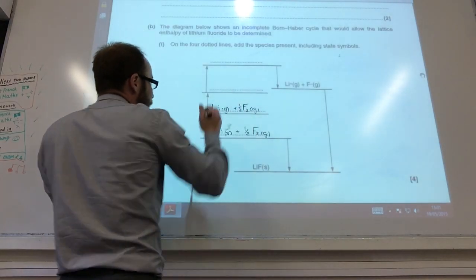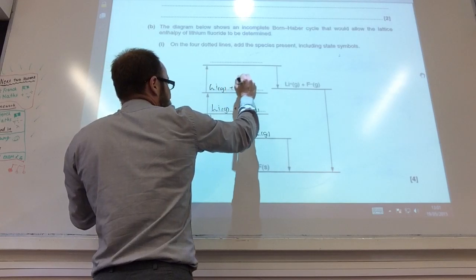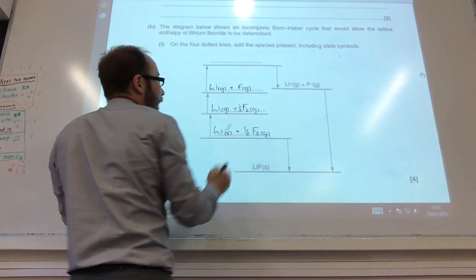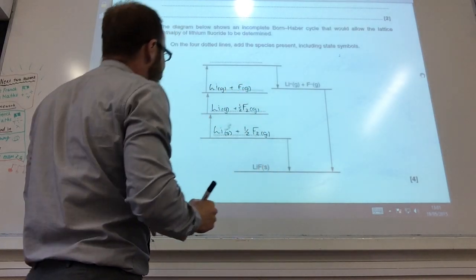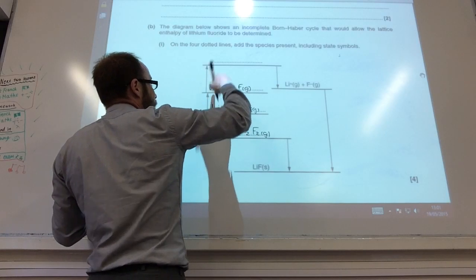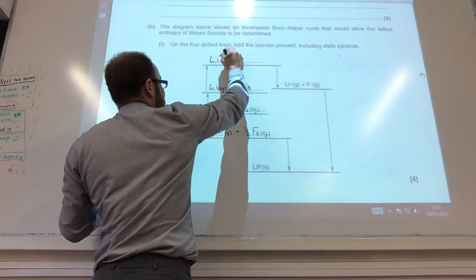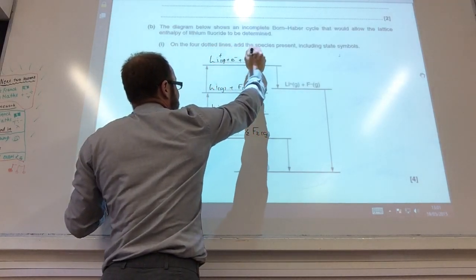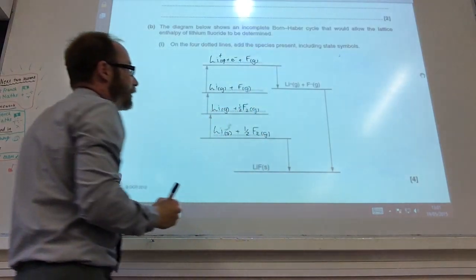So lithium gas and now I've got fluorine gas as well. The next stage is I am going to do the first ionization of lithium, so I get lithium plus gas plus an electron. It's still got my fluorine atoms knocking around.